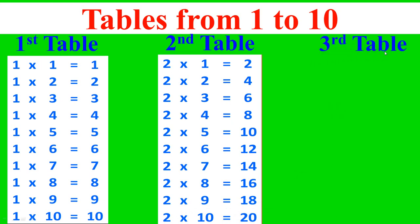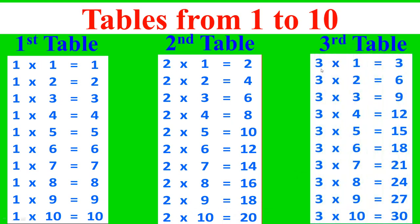Third table: 3 times 1 equals 3, 3 times 2 equals 6, 3 times 3 equals 9, 3 times 4 equals 12, 3 times 5 equals 15, 3 times 6 equals 18, 3 times 7 equals 21, 3 times 8 equals 24, 3 times 9 equals 27, 3 times 10 equals 30.